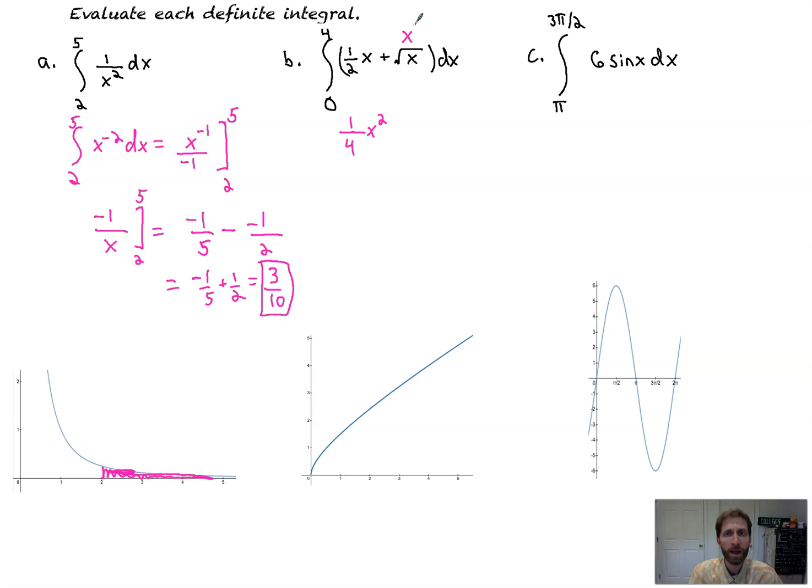Right now we're just doing the Fundamental Theorem of Calculus. x to the one-half is what that is. I add one to that, that's x to the three-halves divided by three-halves, which is the same as multiplying by two-thirds. That is evaluated from 0 to 4.